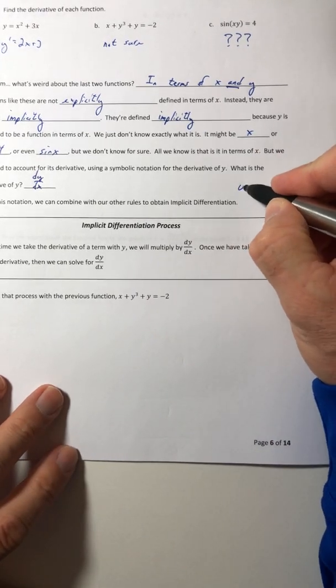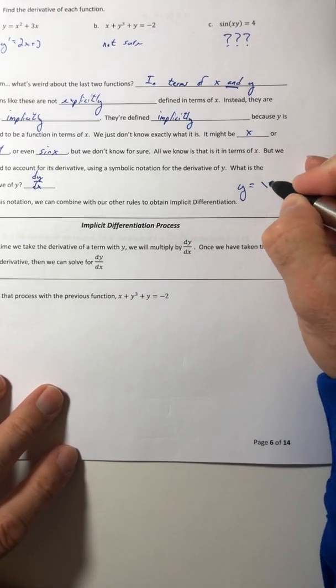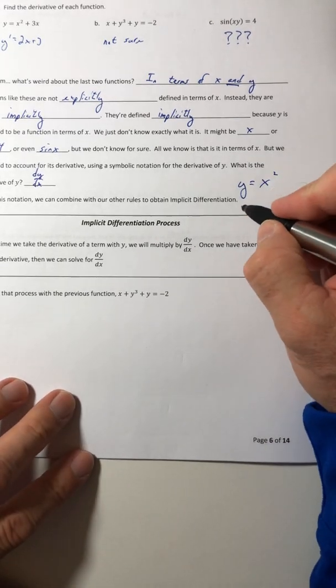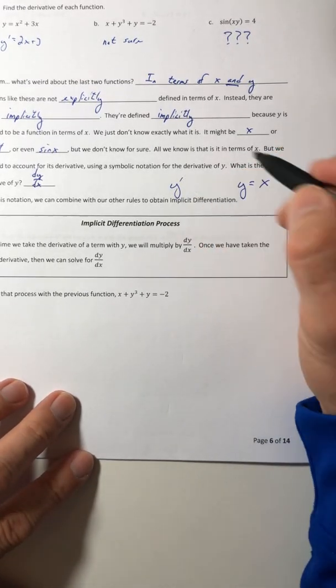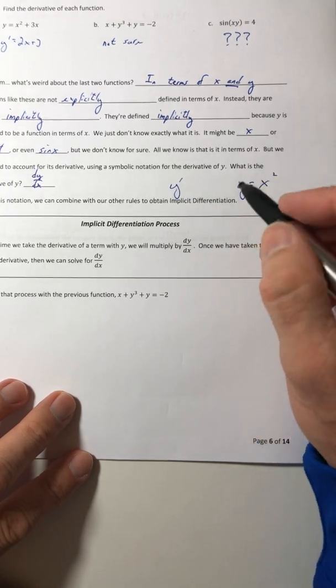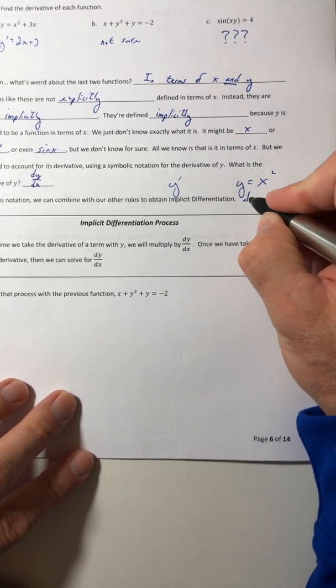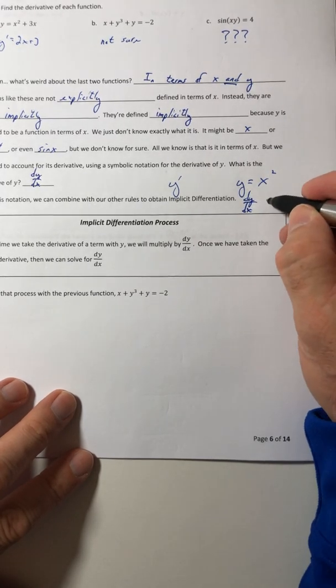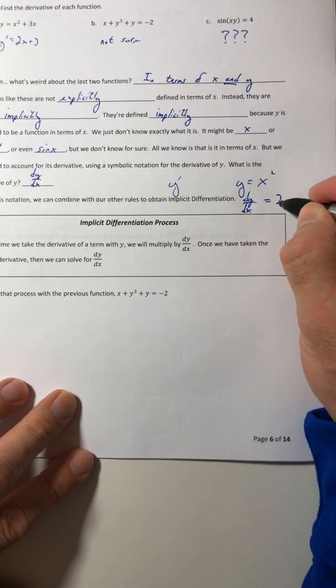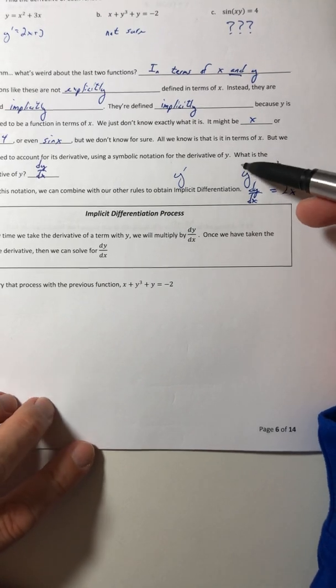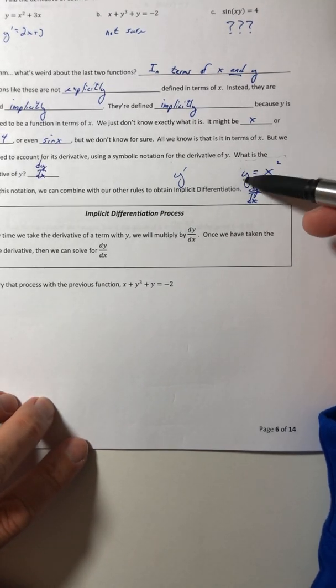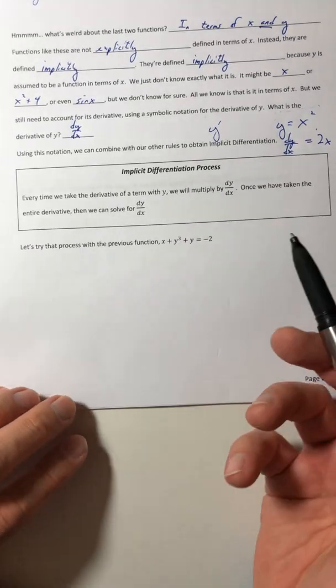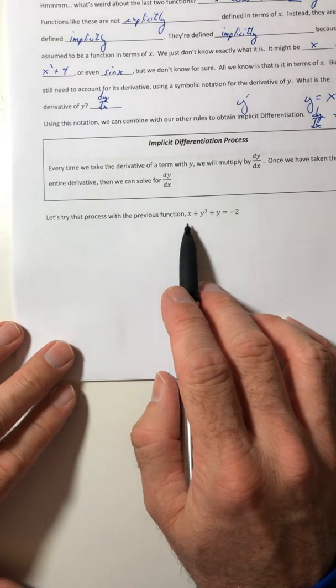Like if we had the equation y equals x squared, and I said what's the derivative? Most of the time, you probably went y prime equals something. Well, instead of y prime, it's just dy dx equals 2x. So when it was defined explicitly in terms of x, you just had to do that one time. Well, now you might have to do it more than once. Okay, so let's see how it goes.